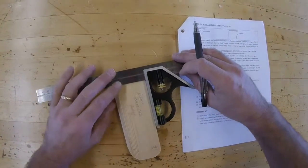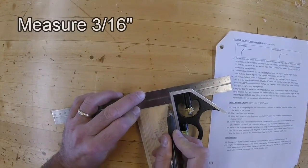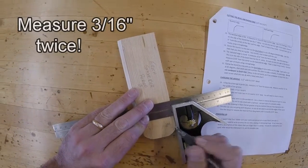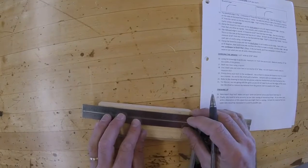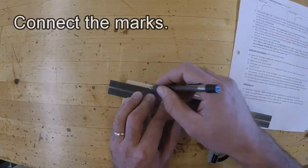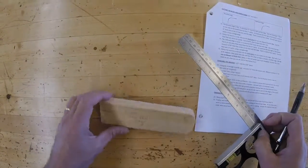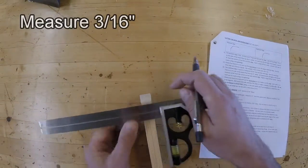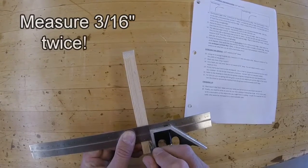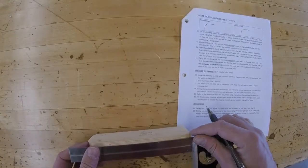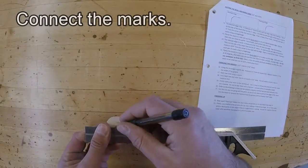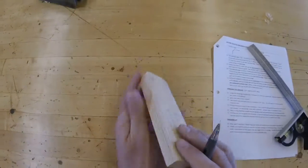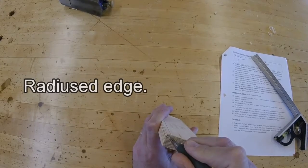So once more, I'm going to use my combination square. We're going to measure down 1, 2, 3 16ths. And again, 1, 2, 3 16ths on the face of the board. And we'll do the same thing on the edge of the board. So now I have a total of 2 lines. One here, and one here. And this time we're going to make a radius, or a round corner. And again, we'll use our block plane to do this.